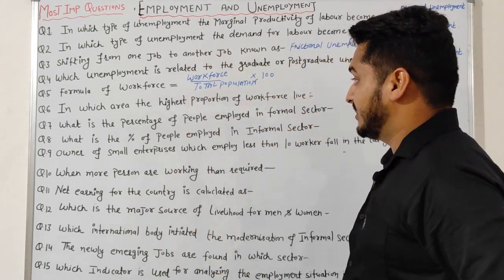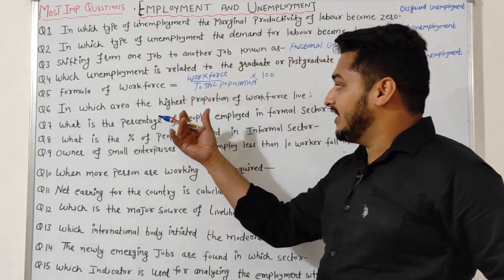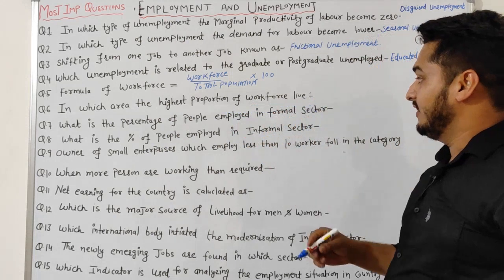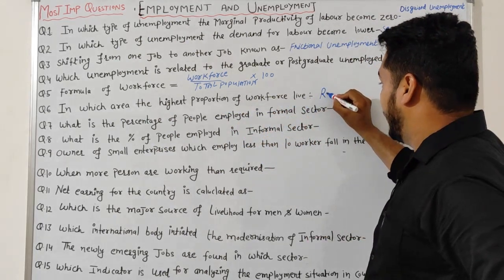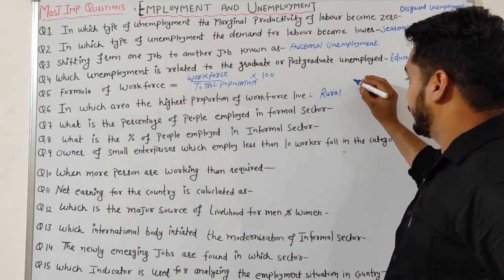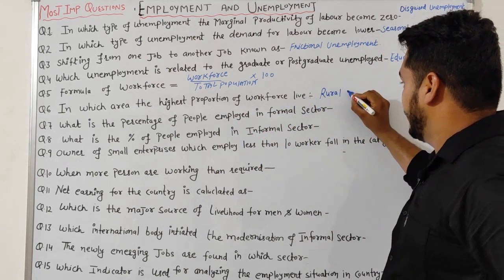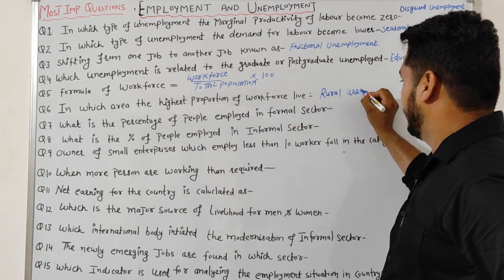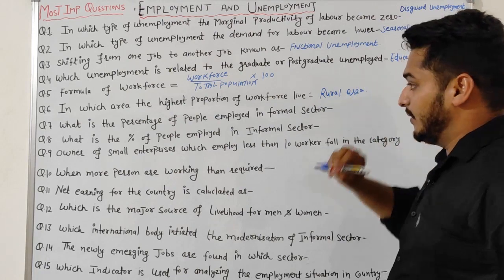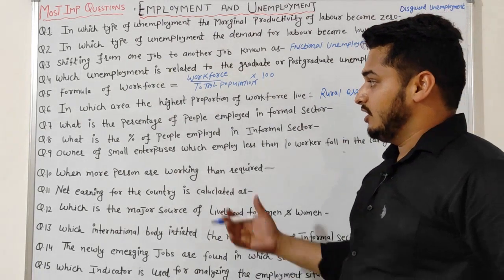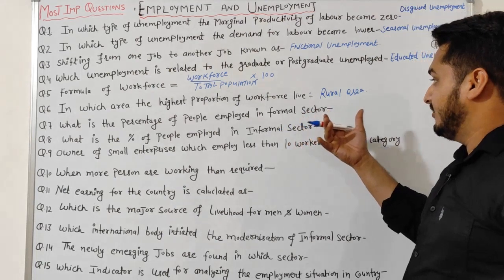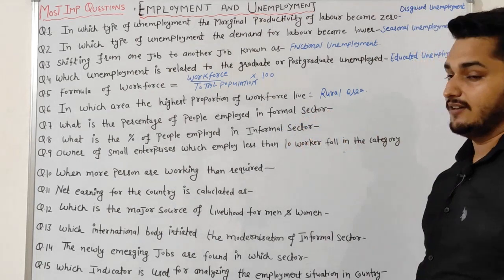Question 6: In which area does the highest proportion of the workforce live? The answer is rural areas — the highest proportion of the workforce lives in rural areas. Question 7: What is the percentage of people employed in the formal sector? There is a very small percentage — only 6% of people are employed in the formal sector.